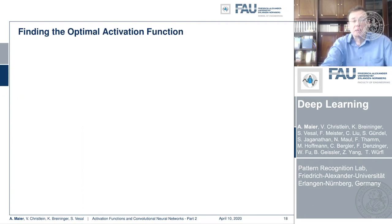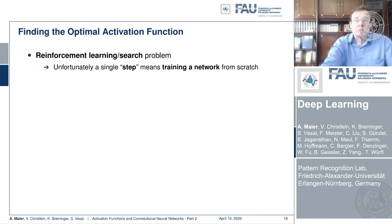People even went this far that they were trying to find the optimal activation function. And they used a reinforcement learning search in order to find them. We'll talk about reinforcement learning in a later lecture. And we'll just summarize the results here. One problem in this reinforcement learning type of setup is that its computation is very expensive because in every step of the reinforcement learning procedure, you have to train an entire network from scratch.